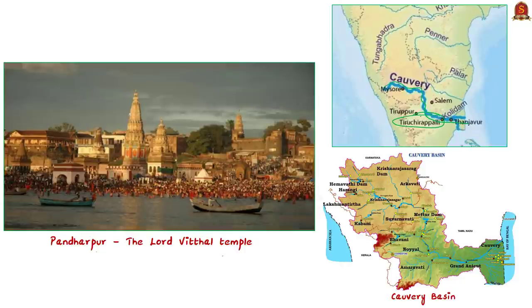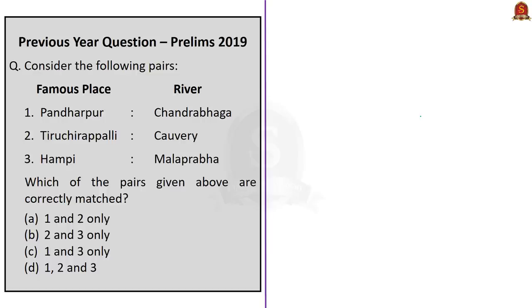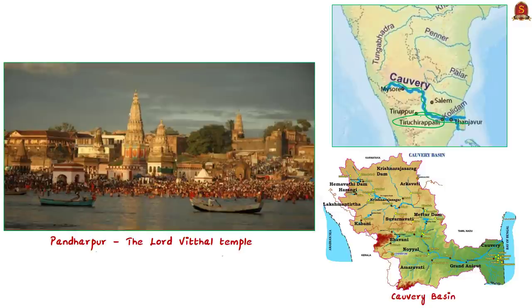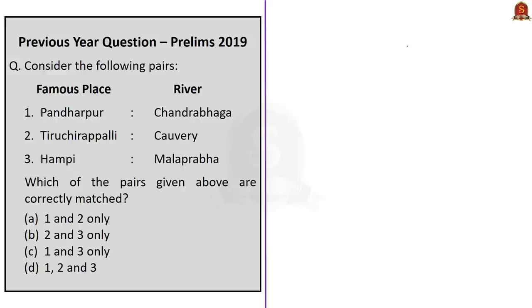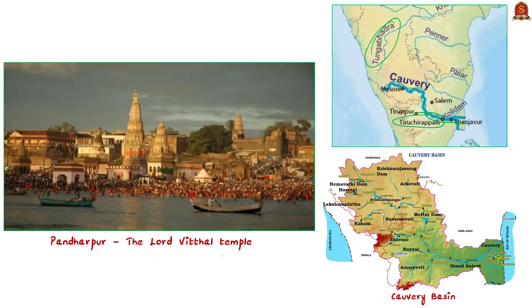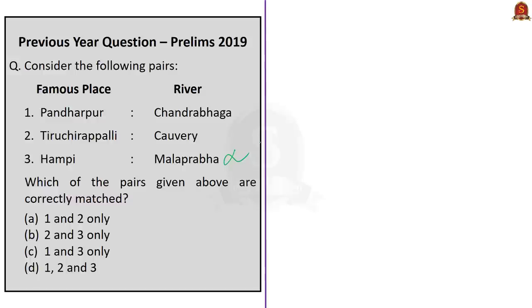Coming to the third pair: Hampi – Malaprabha. Hampi is a city near the Tungabhadra River with numerous temples, farms, and trading markets — which means the pair is wrong. The Malaprabha River flows in the western part of Karnataka and has no direct link with Hampi. So pair 3 is wrong, and the correct answer is Option A: 1 and 2 only.